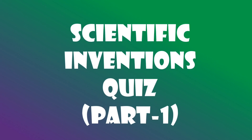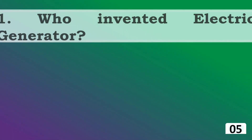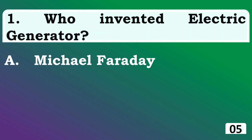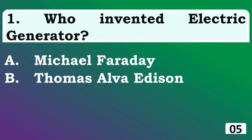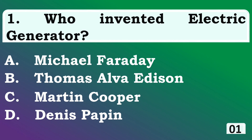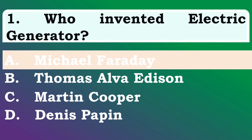Scientific Inventions Quiz Part 1. Who invented the electric generator? The right answer is option A.